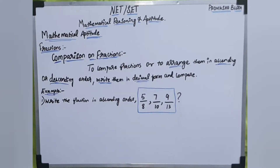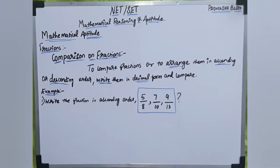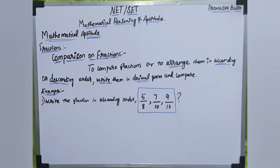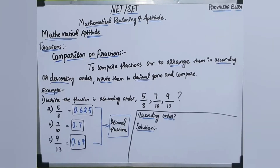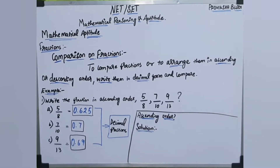Write the fraction in ascending order. The first step we have to do is take the decimal fraction for every fraction.